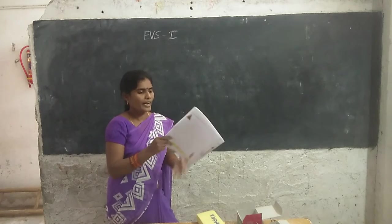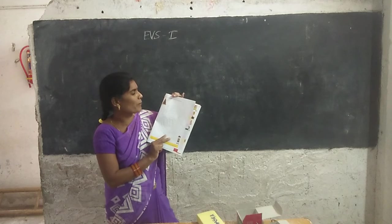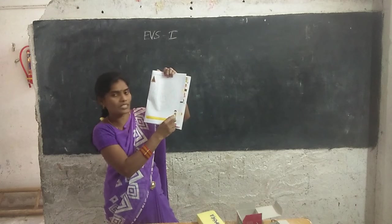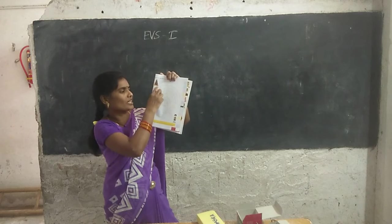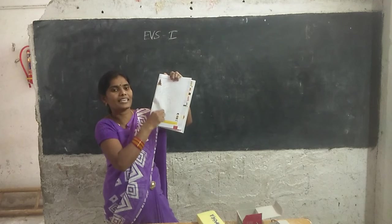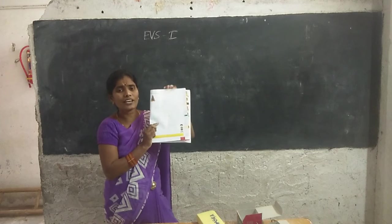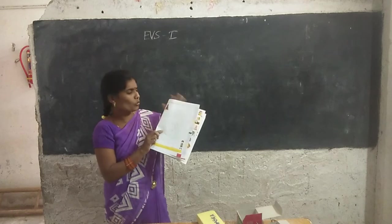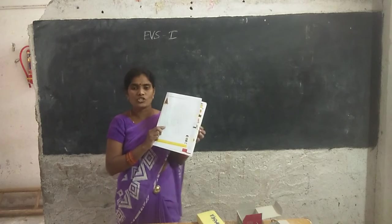Okay, that activity is completed. Next, choose the right path to reach the Christmas tree. Here is the boy — he has to go to the Christmas tree. Draw a line to go to the Christmas tree.